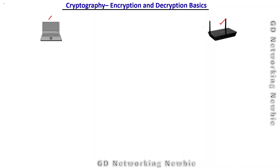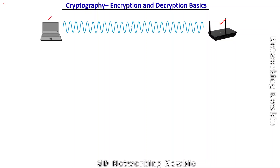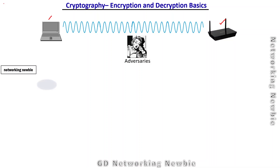This sender wants to send that message using a wired or wireless medium. For example, I have taken a wireless medium through which the sender is sending the message to the receiver. But there is always a chance that there can be a third party, which we call adversaries — they can actually read, hear, or steal our message. To avoid this situation, we pass our message through a process that will convert that message into something different from the original message — we call that a code.